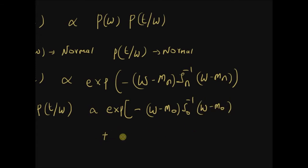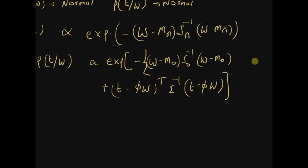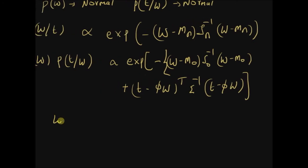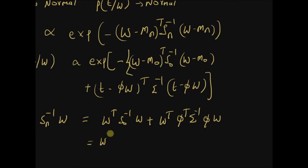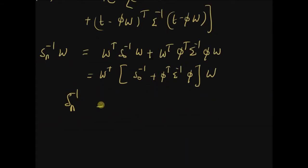The likelihood function has the form (t − φw)ᵀ σ⁻¹ (t − φw). By comparing the quadratic terms in w from the product of prior and likelihood, we have wᵀ S_n⁻¹ w equivalent to wᵀ (S₀⁻¹ + φᵀ σ⁻¹ φ) w. Therefore the posterior covariance satisfies S_n⁻¹ = S₀⁻¹ + φᵀ σ⁻¹ φ. This is equation 1.